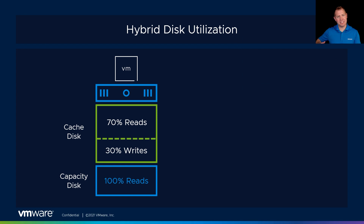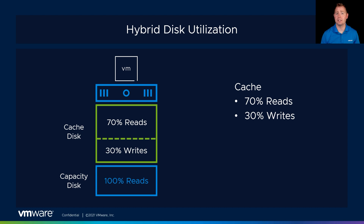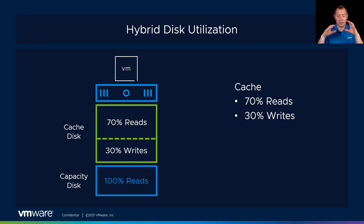Switching gears and talking about our hybrid model. We do things slightly differently because we want to maximize that cache disk as much as possible since it's the SSD or NVMe, then take advantage of those spinning disks for capacity purposes. For our cache disk, we do a 70-30 split. This is an allocation of storage — not an actual partition. So if you use a tool to look at disk partitions, you wouldn't see a physical partition. This is just a logical allocation of space: 70% used for reads and 30% used for writes.